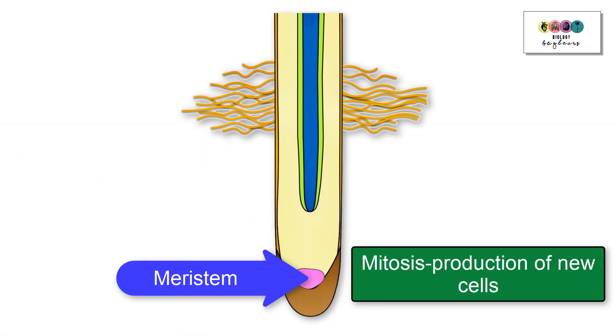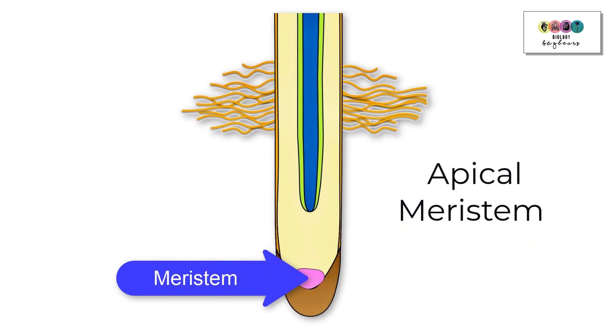All the cells of the root cap and the root would be produced by this meristem. Because the meristem is located at the tip of the root, it's known as an apical meristem. You would also find an apical meristem at shoot tips.